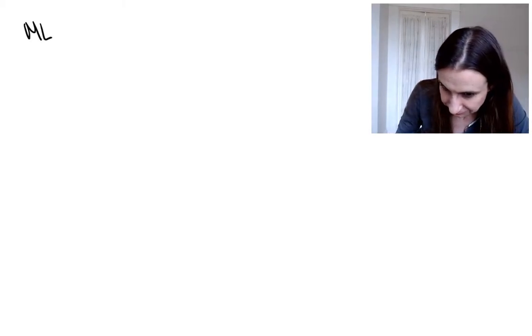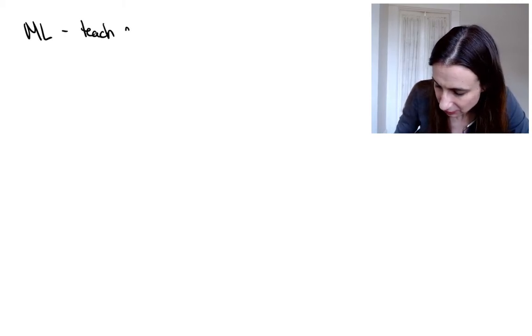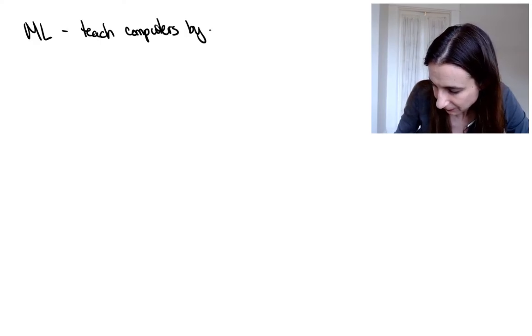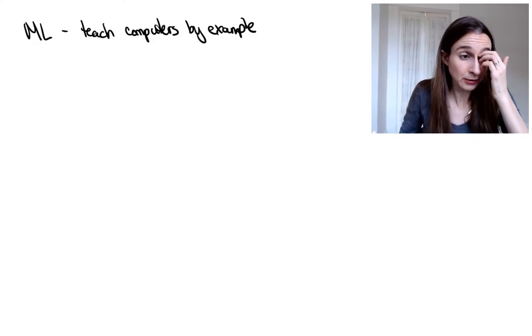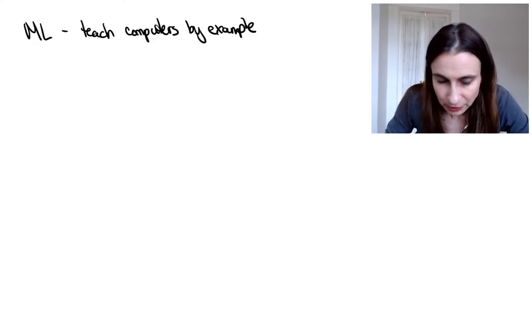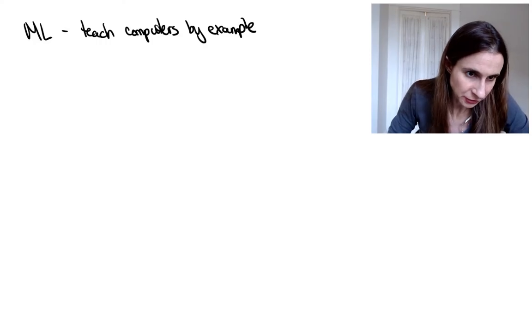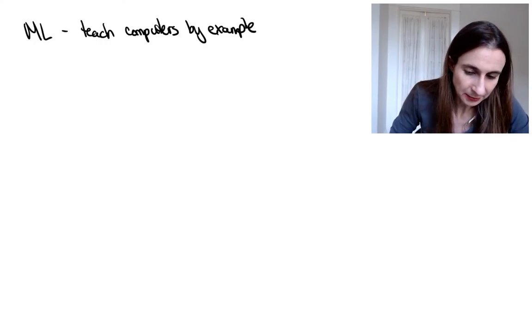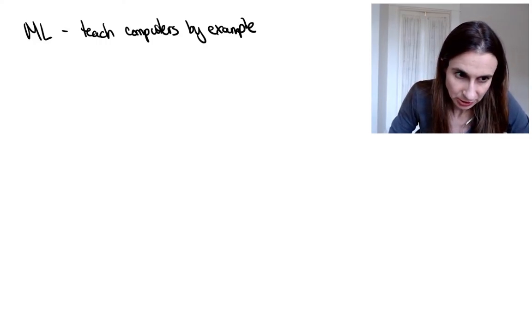Hi, so I'm going to give a little introduction to machine learning. The goal of machine learning is to teach computers by example. So I want you to think about, let's say you're building a computer vision system for a self-driving car. That's a really good application for machine learning.